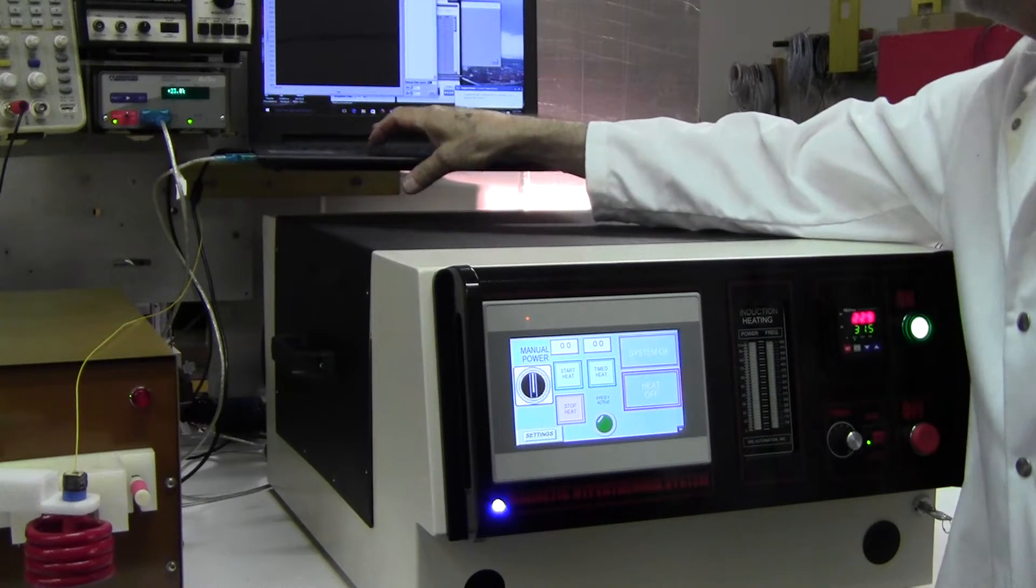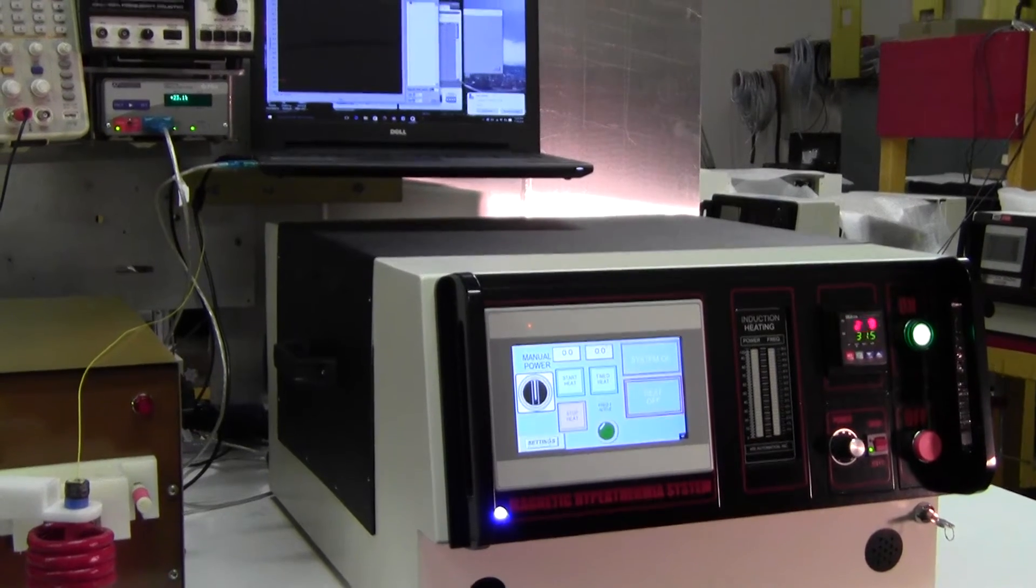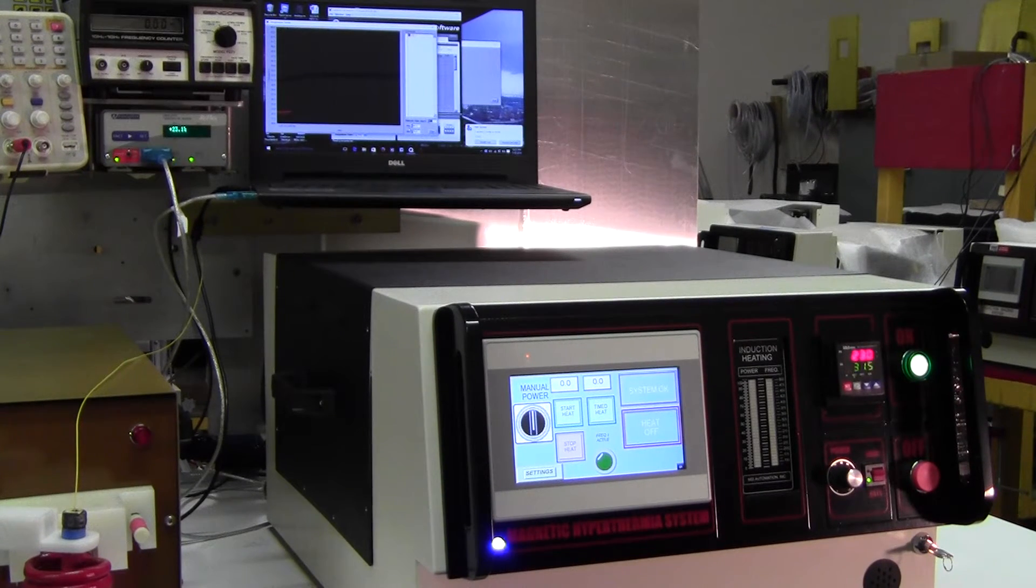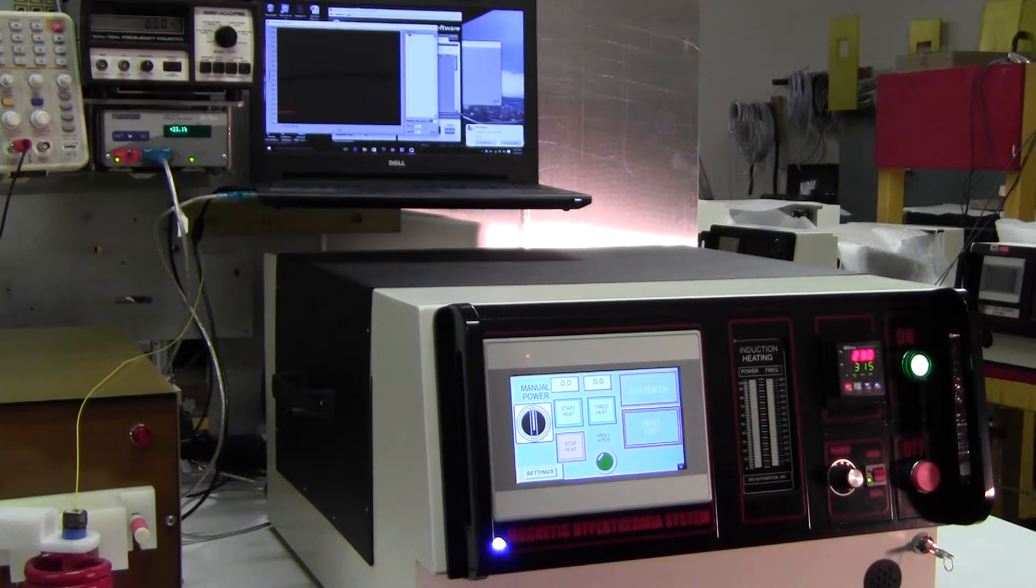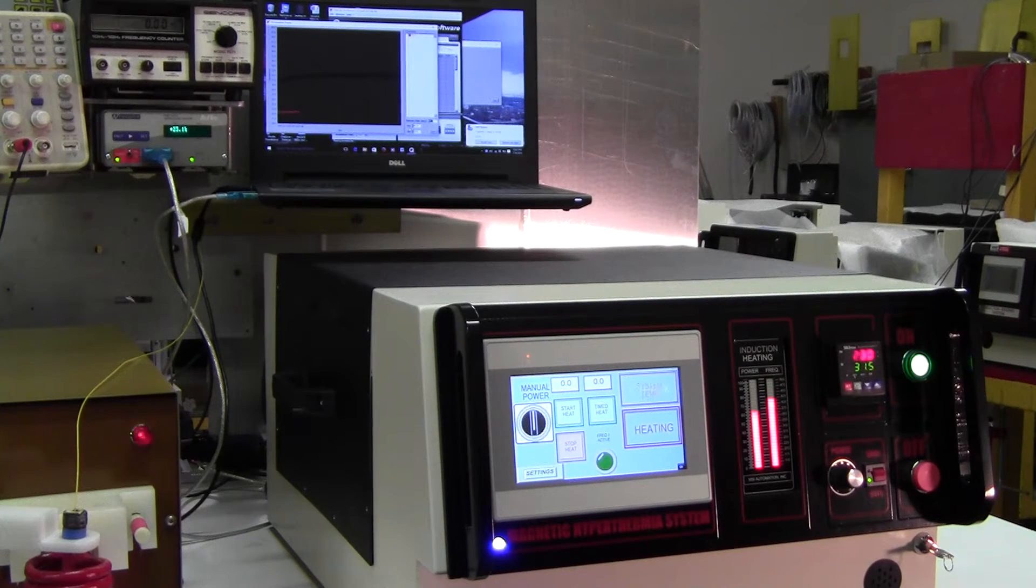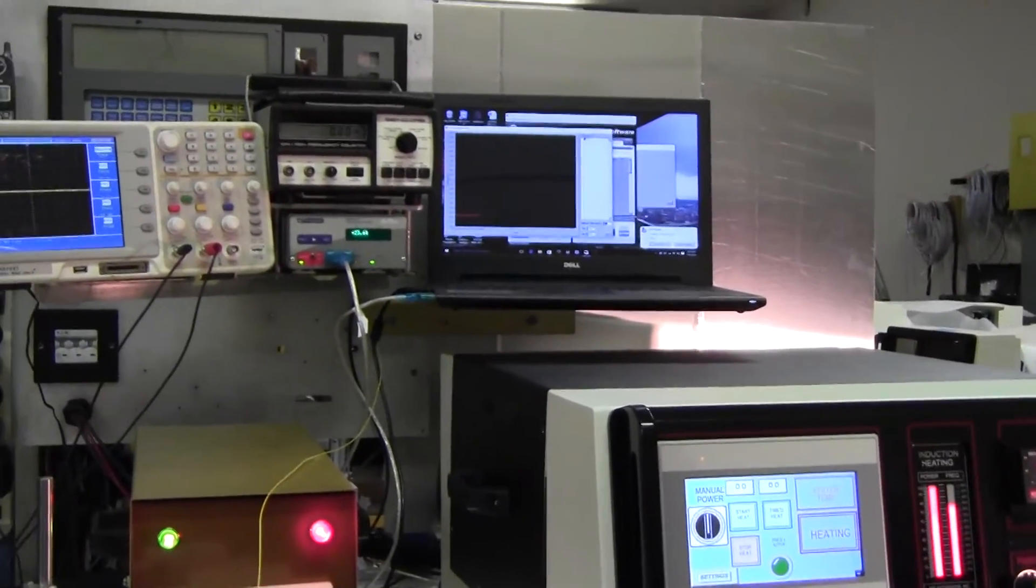I want to reset the bar graph, excuse me, the XY coordinate graph. So what we'll do is we're going to heat. You can see we're flatlining right now. Power's on. Full power. Now I'll zoom in on the display and we'll see what happens.